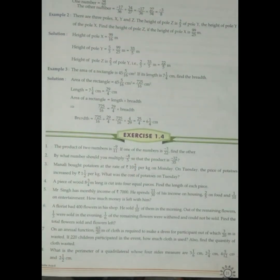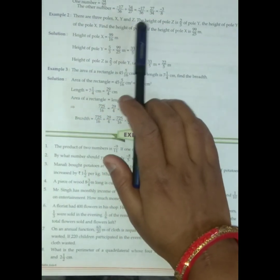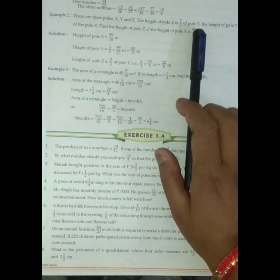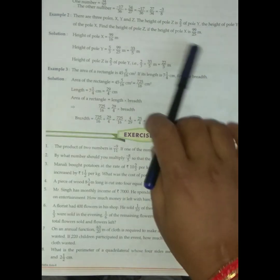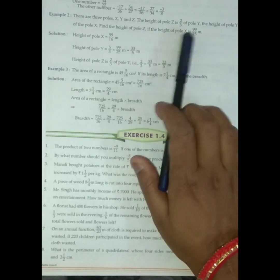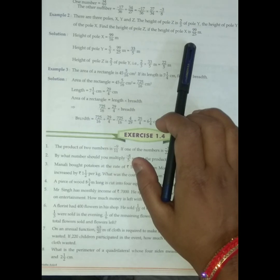That's good. Now see example number 2. There are 3 poles X, Y and Z. The height of pole Z is 2 by 3 of pole Y. The height of pole Y is 5 by 3 of the pole X. Find the height of pole Z if the height of pole X is 99 by 25 meter.